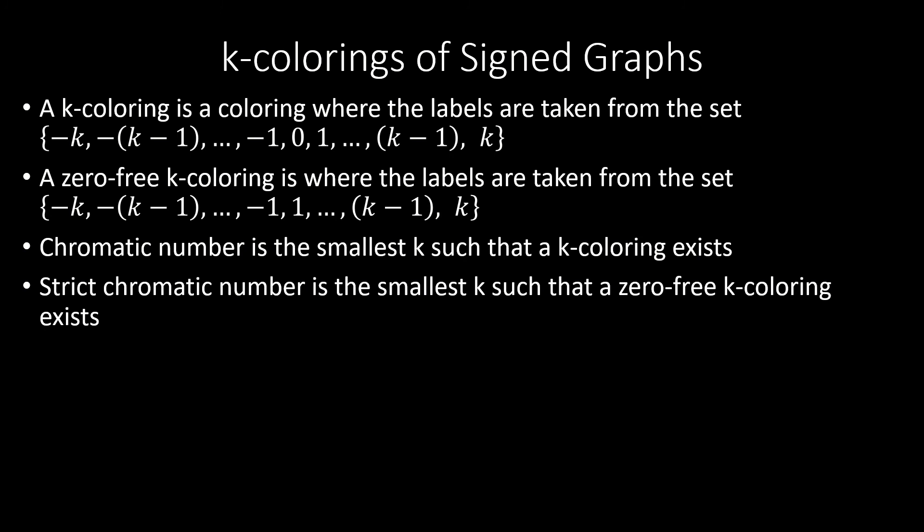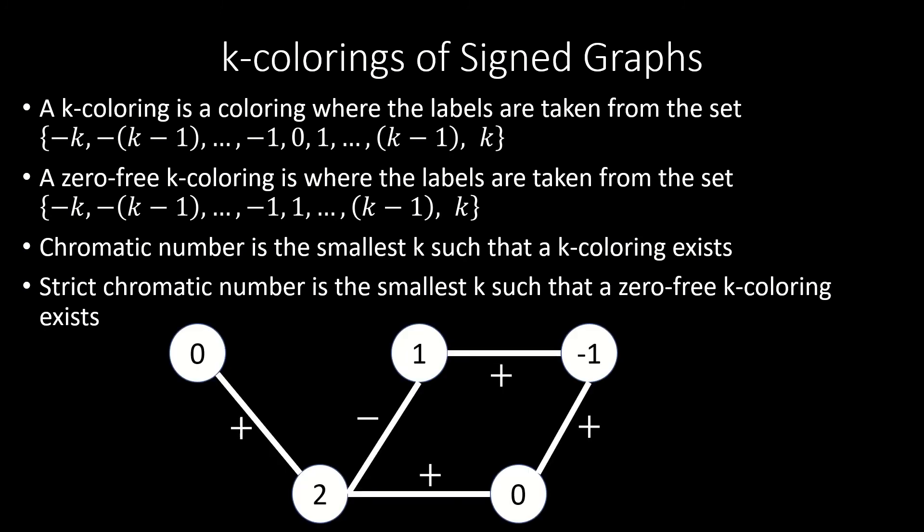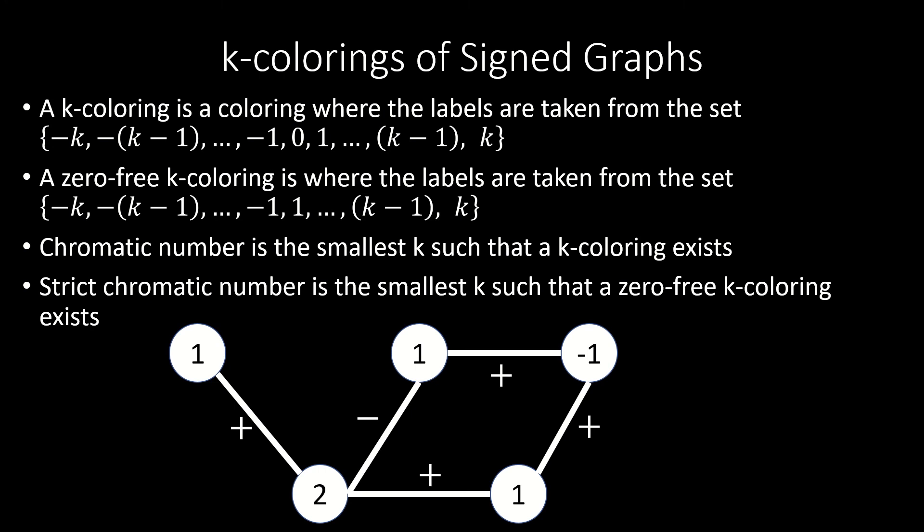To demonstrate, here's a signed graph with a 2-coloring. Its colors are taken from the set {-2, -1, 0, 1, 2}. And here is the same signed graph with a zero-free 2-coloring. Note that we don't have to use all the colors in our set for it to be a 2-coloring. As long as the labels are taken from the set of integers whose magnitude is at most 2, it's still a 2-coloring.